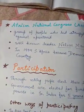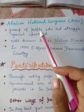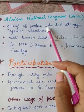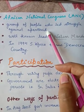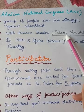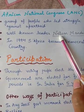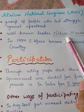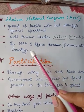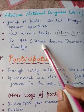Next is the African National Congress, ANC. It was a group of people who led the struggle against apartheid. The famous leader of the ANC also went to jail many times. After several years of continued struggle against apartheid, finally in 1994 South Africa became a democratic country, similar to how India gained independence after many years of struggle.